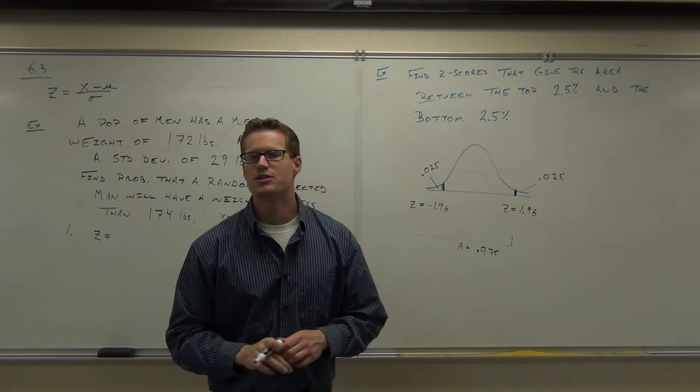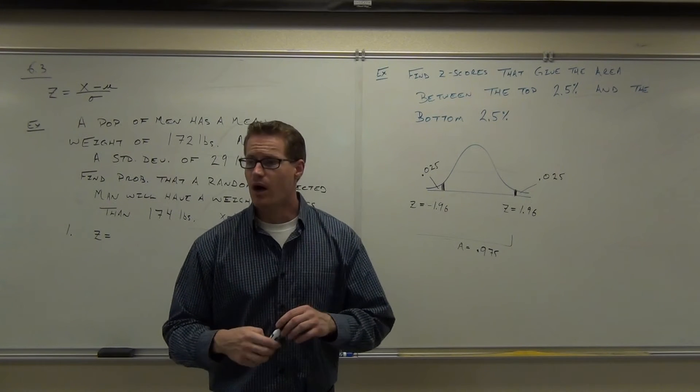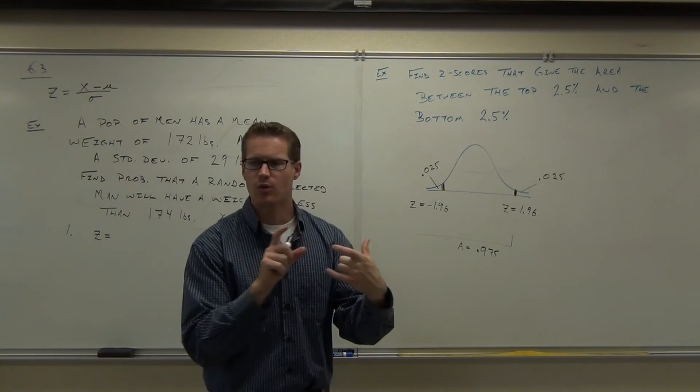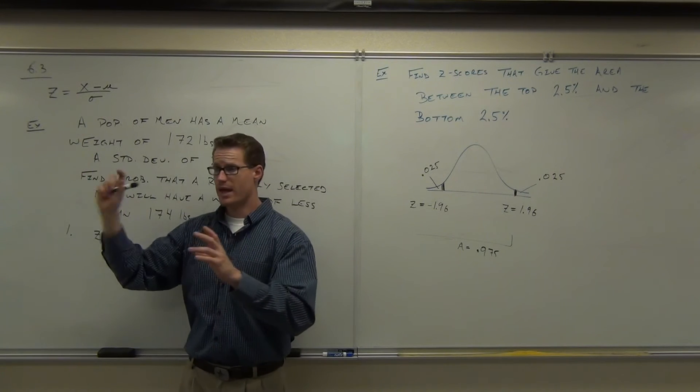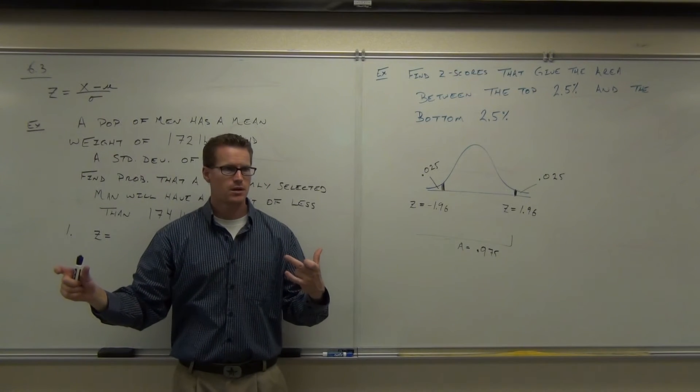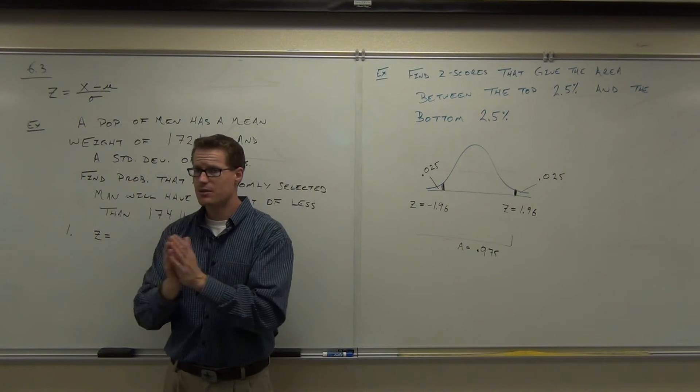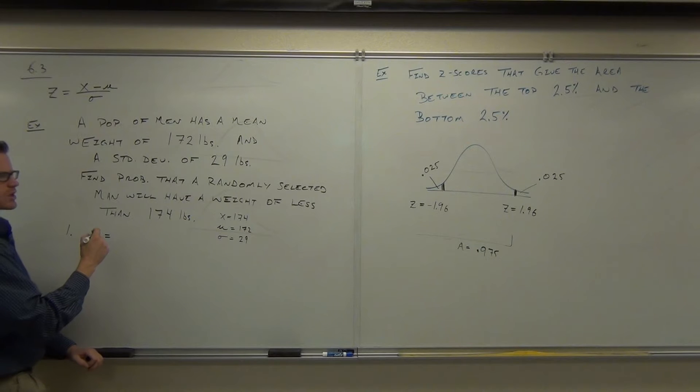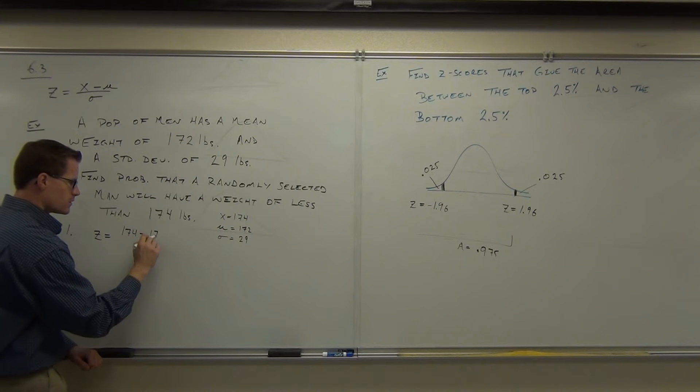One of the biggest mistakes - it's a simple mistake, but it's a huge mistake - a lot of people will get these numbers screwed up and they'll always put the big one minus the small one. This formula doesn't change. This formula says x minus mean. No matter what the x is, no matter what the mean is, you do the x first, then you do the mean. Otherwise, you'll always get a positive if you always put the big one first. Anything to the left of the mean is going to be negative z-score.